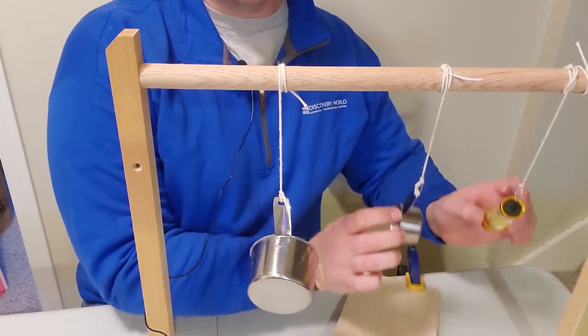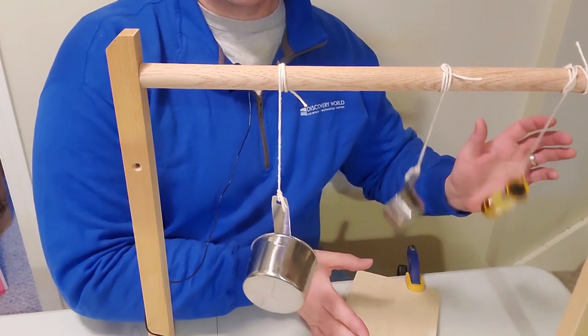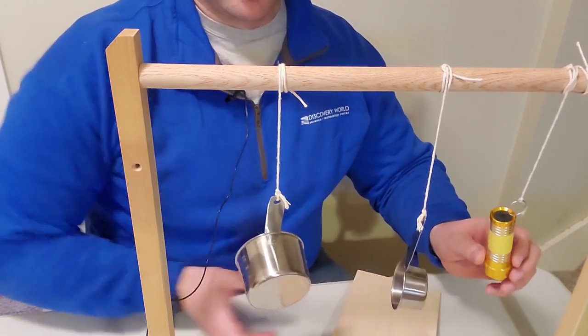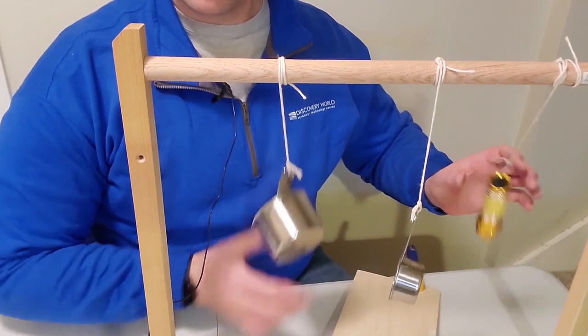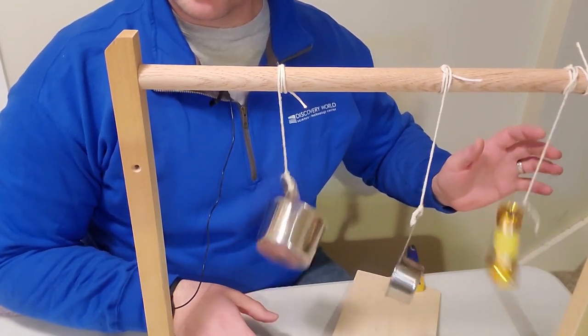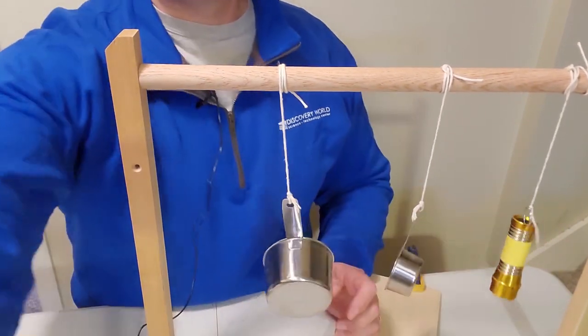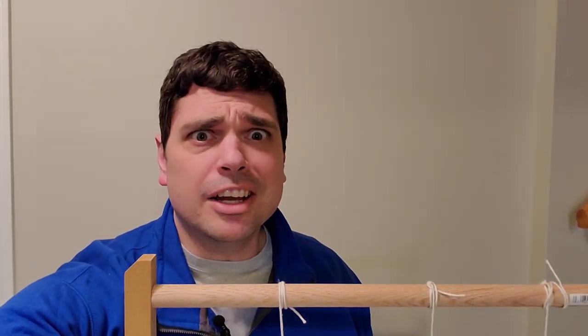If I take the little one and the flashlight, they also swing at the same speed. The big one and the flashlight swing at the same speed. What's going on here?